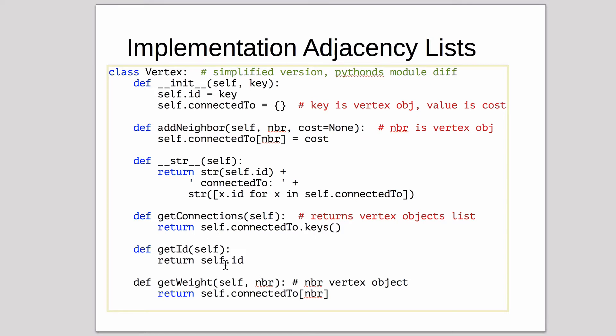GetID just returns the ID. GetWeight returns the weight for a particular vertex connection. So it looks up the vertex that's connected. If the vertex doesn't exist, this connected to lookup will give you an error.